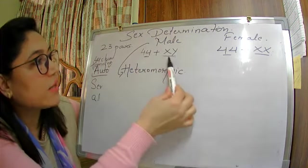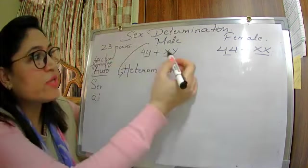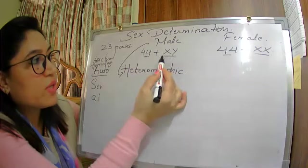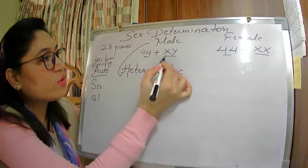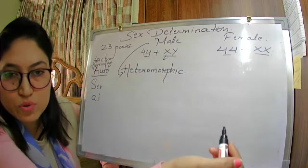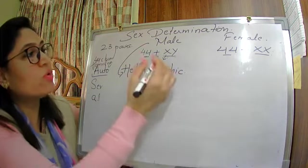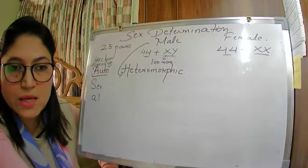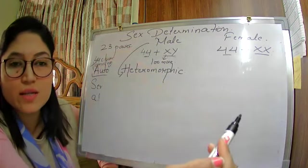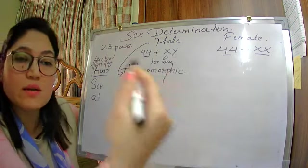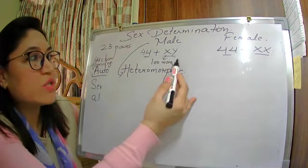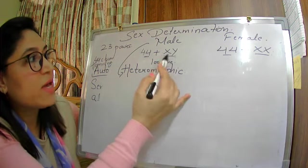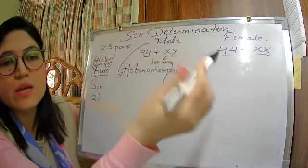Since the sex chromosomes are different in size and shape, which is larger? X chromosome is larger than Y chromosome. X chromosome has 100 more genes than Y chromosome, and there are no counterparts for those 100 genes in X on the Y chromosome. That is why X chromosome is longer and bigger than Y chromosome.